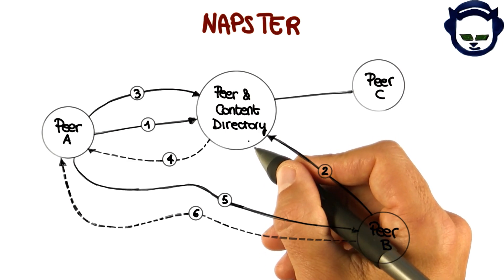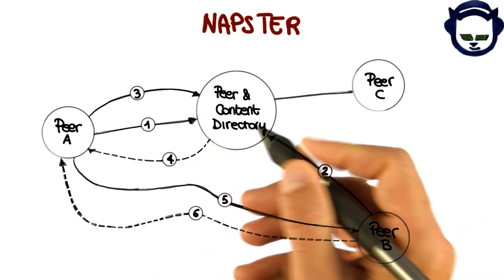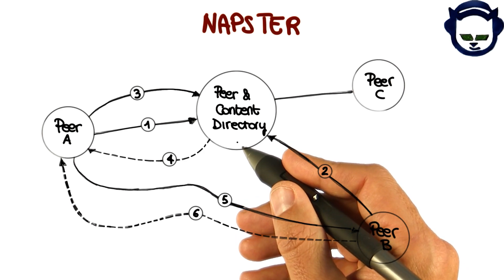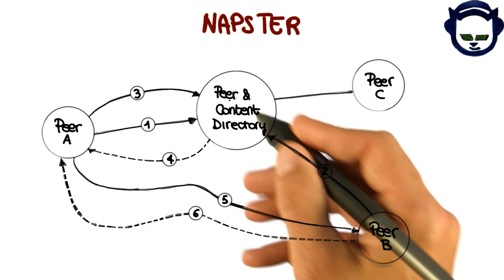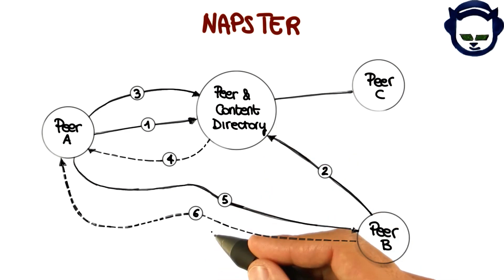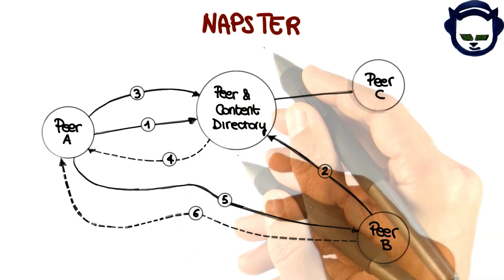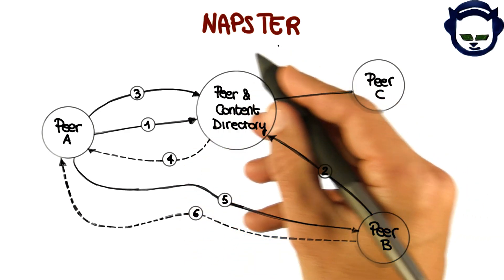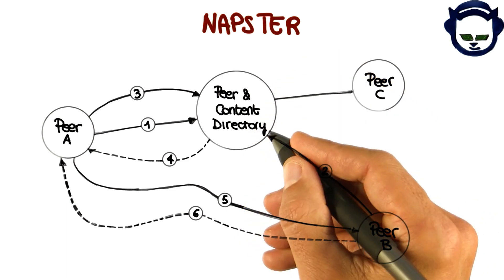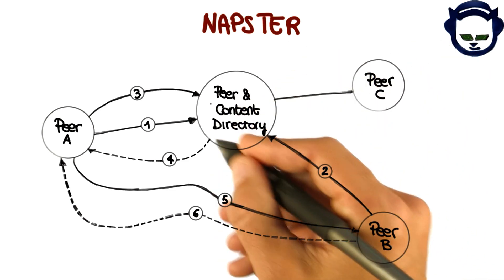The content directory is very likely to cause problems when the number of peers grows too large, because at that point there are going to be too many requests to the peer and content directory, and it is unlikely to be able to keep up with all the requests. So some changes in the architecture will have to be made. In the case of Napster, we didn't see this problem occurring because Napster got sued and ceased operation before the problem actually manifested.